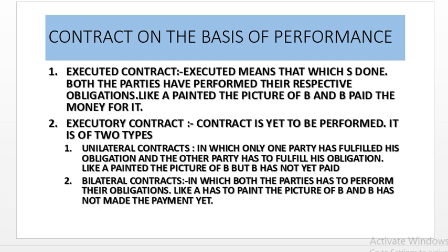Executory contract means a contract yet to be performed. Unilateral contract — like A has painted the picture but B has not made the payment. One party has performed his part while the other party has to perform his obligation.